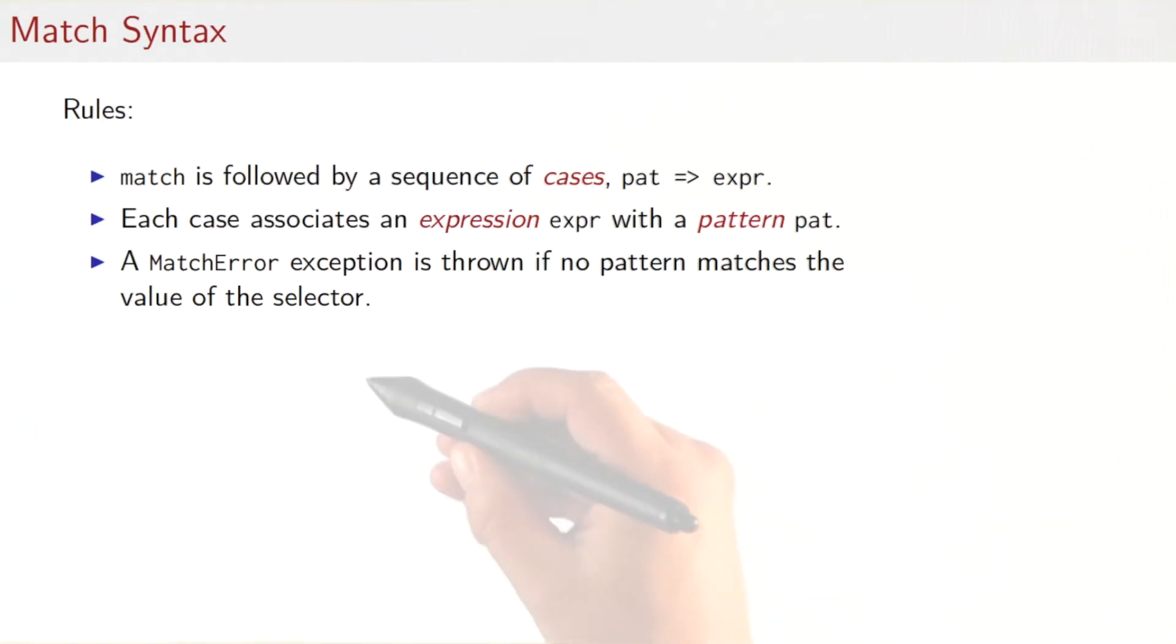So the general form of a pattern matching expression is as follows. We'd start with a selector expression e, then comes the keyword match, and then come a sequence of cases. Each case starts with the keyword case, a pattern, a right arrow, and an expression. And the meaning of such an expression would be that the selector expression e is matched against all the patterns. The first pattern that matches would then lead to the corresponding expression being evaluated. And if none of the patterns matches, you would get an exception, which is called a match error.